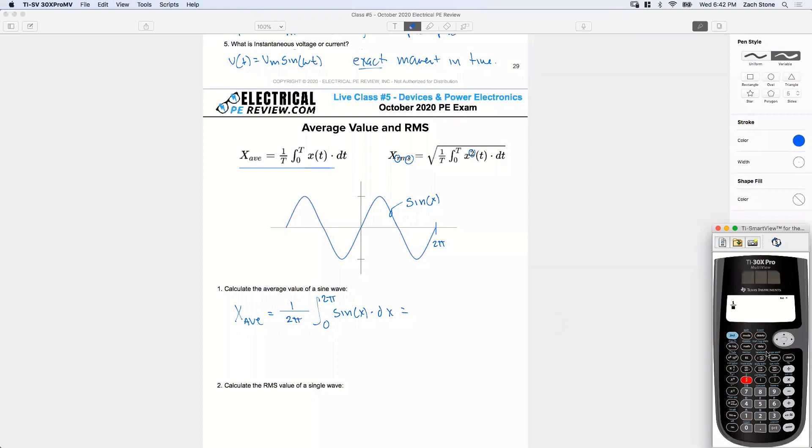I've got one divided by two pi. Here's my integral button. I've got zero to the same two pi. And I'm just going to use sine of x.